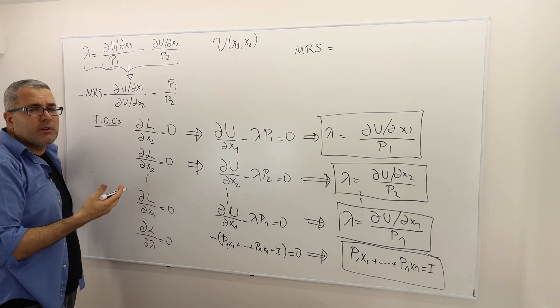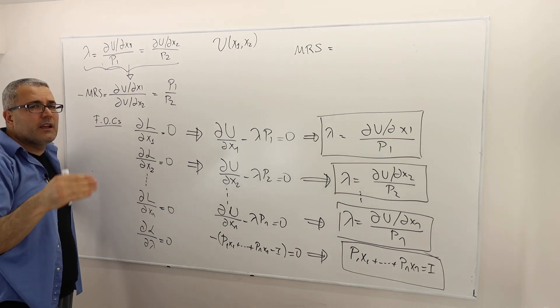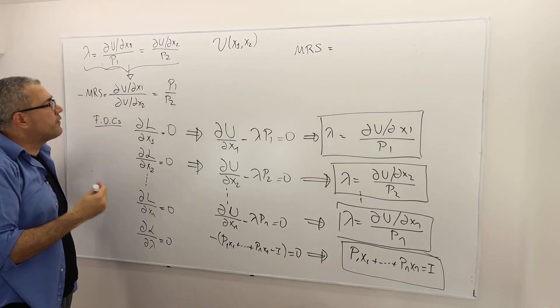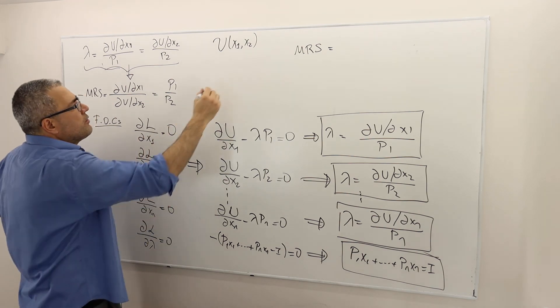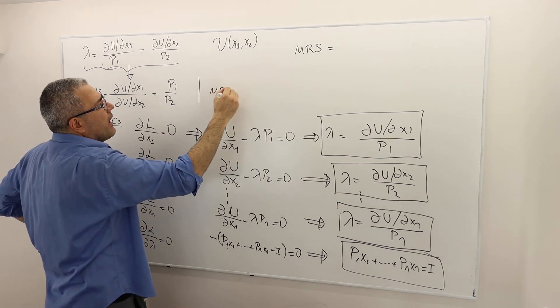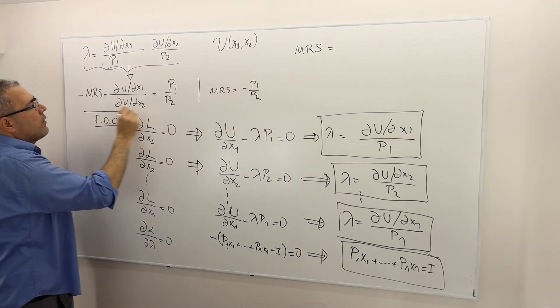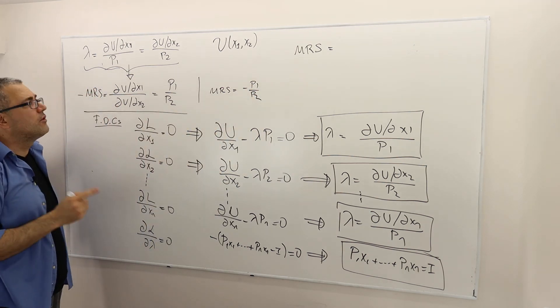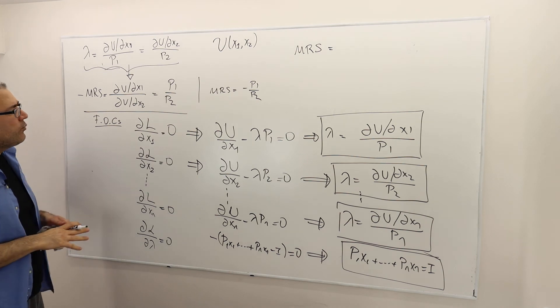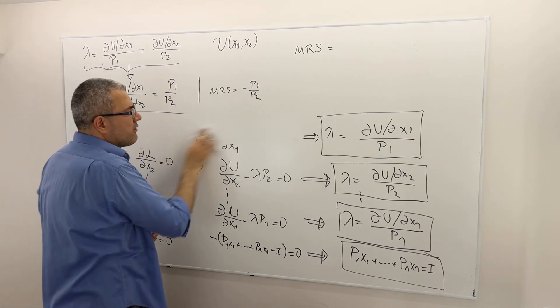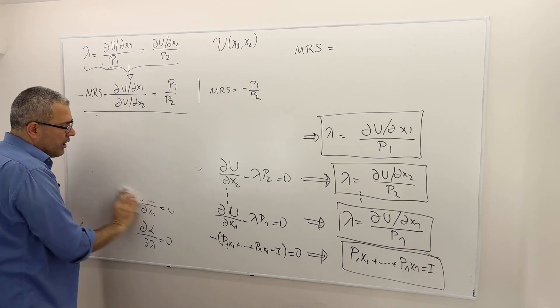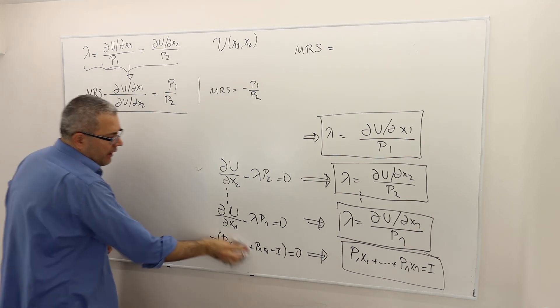So remember the last time, by looking at the geometric framework, we had this marginal rate of substitution has to be equal to minus price ratio. There you go. We got exactly that. So therefore, when we apply this idea, the Lagrangian, to N goods, we're going to have exactly the same thing.